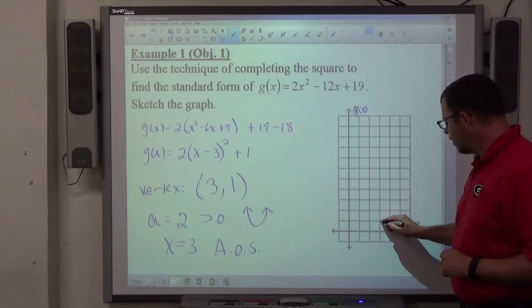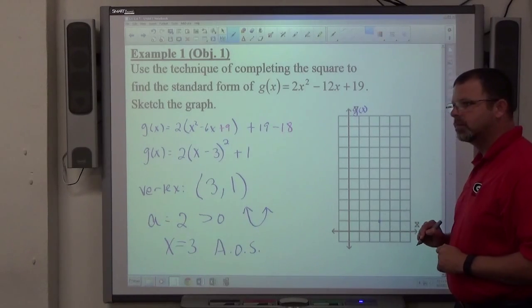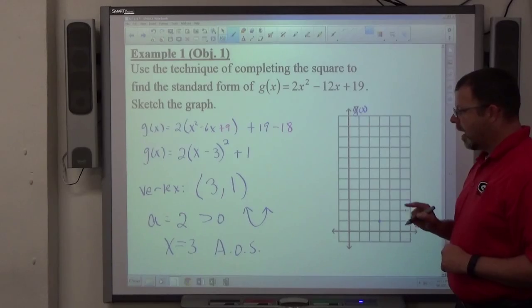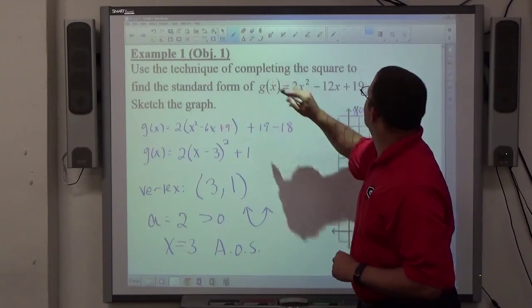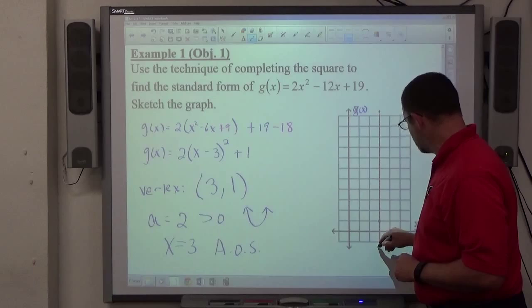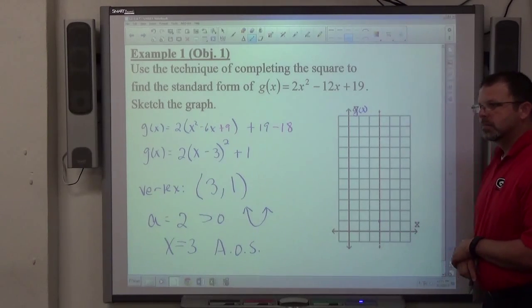1, 2, 3, 1 is my vertex. x equals 3 is my axis of symmetry, which I'm going to draw as a vertical line dashed through the vertex.